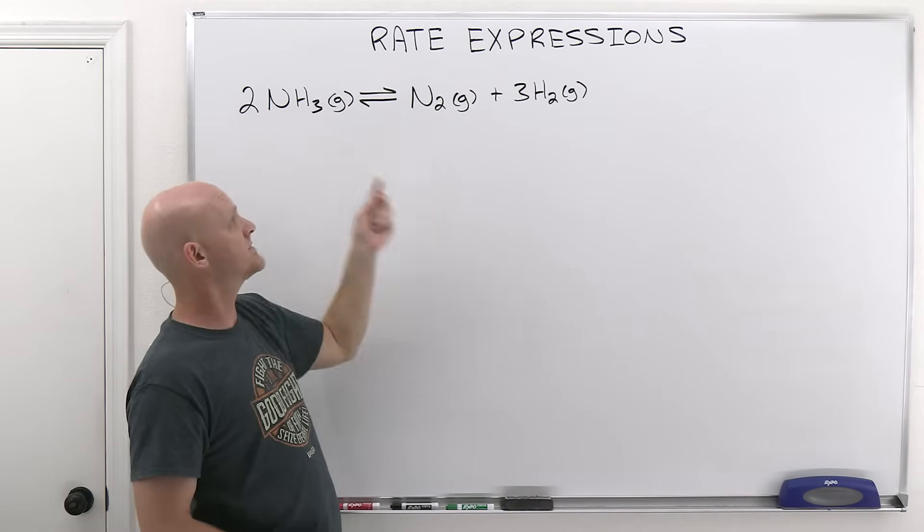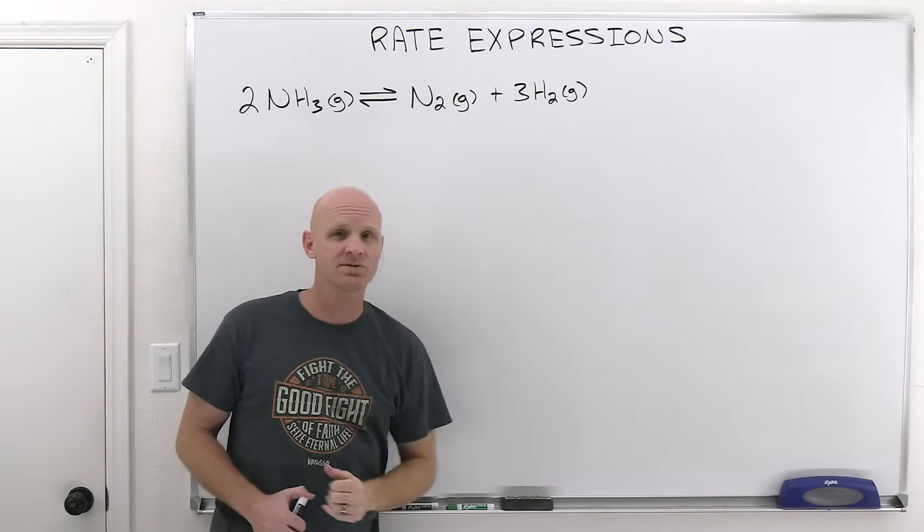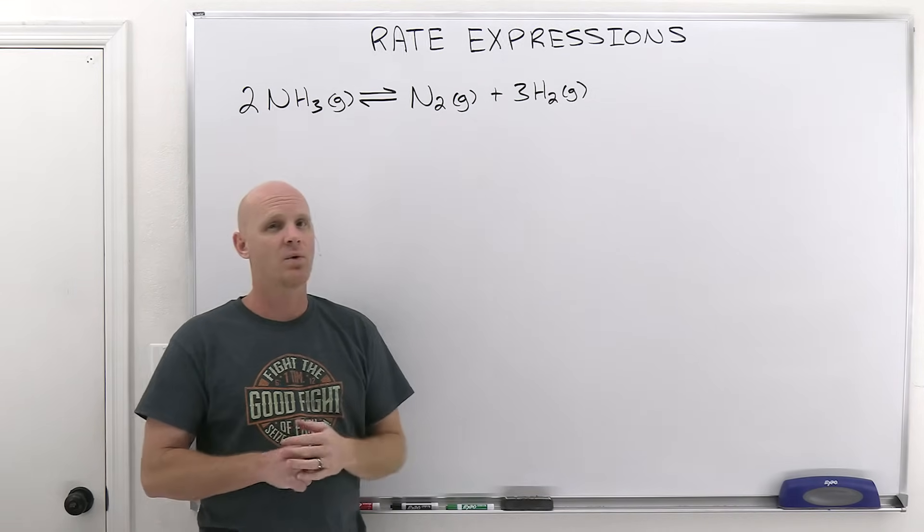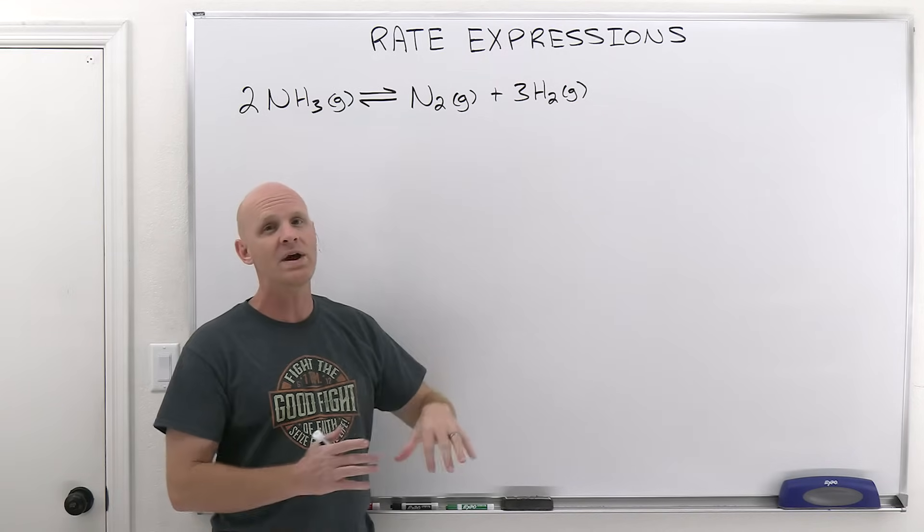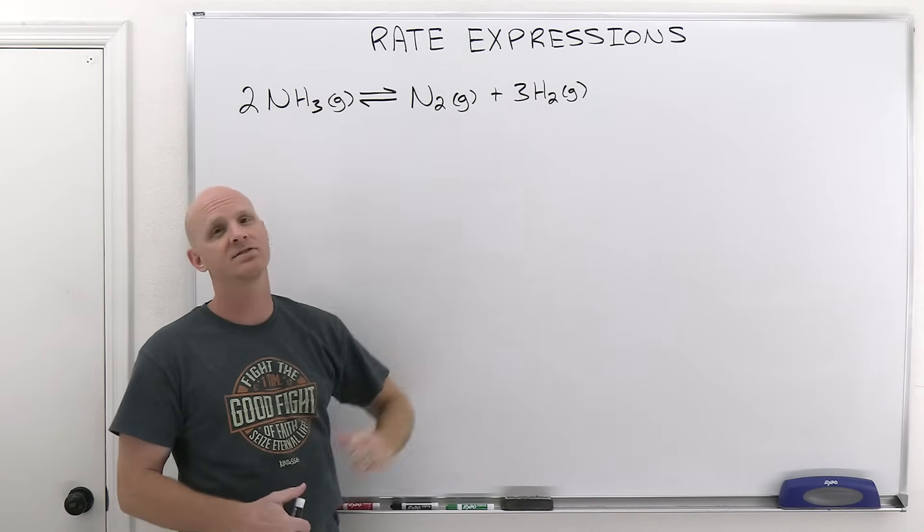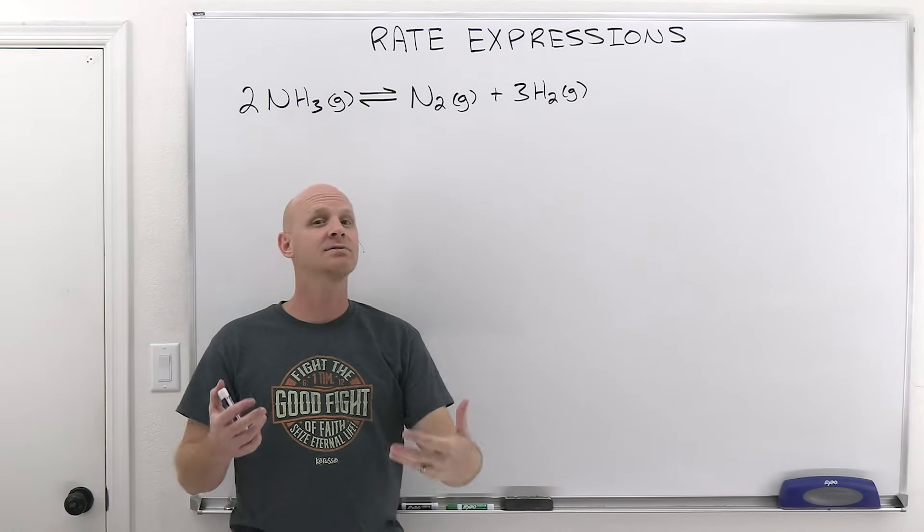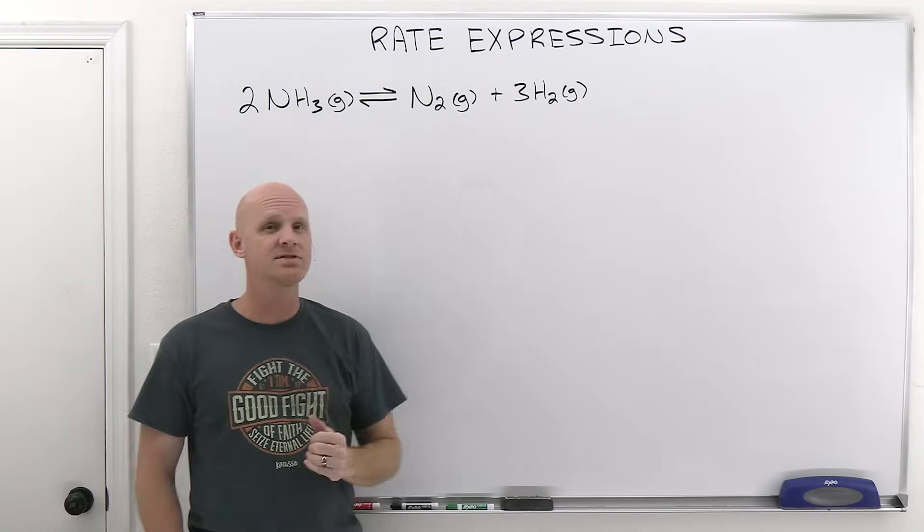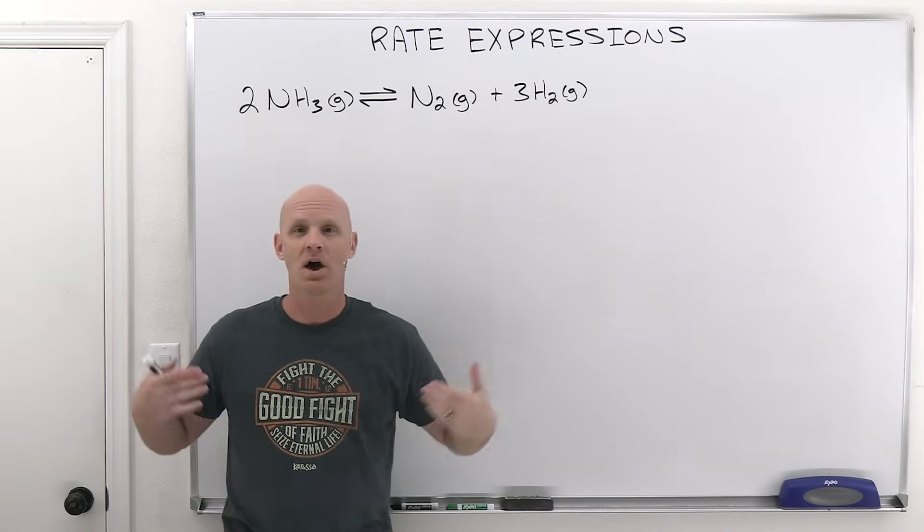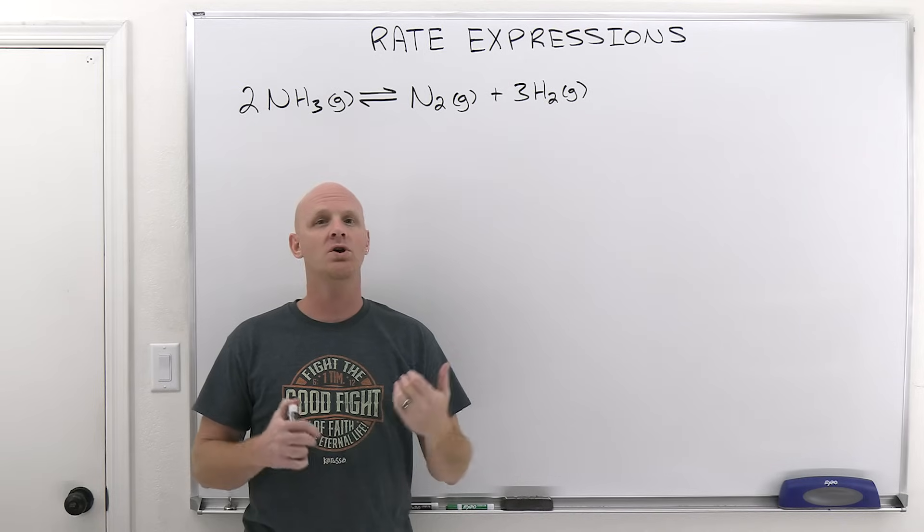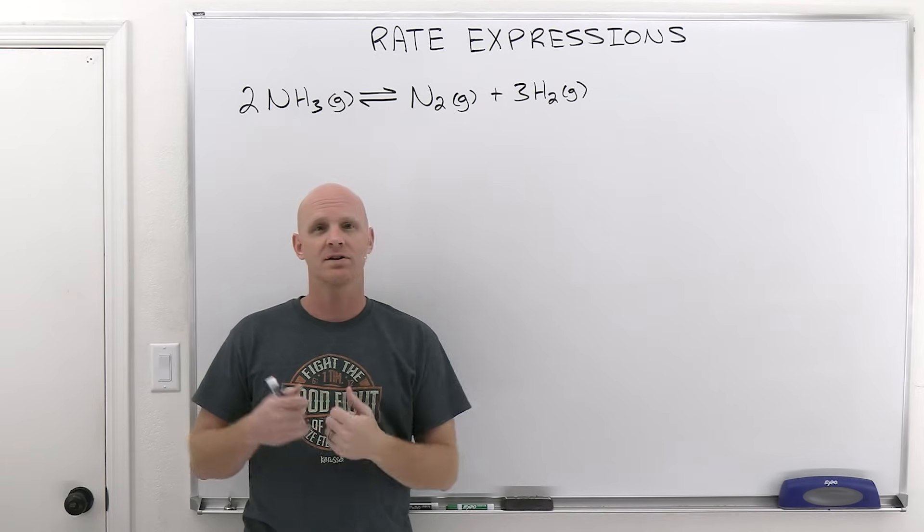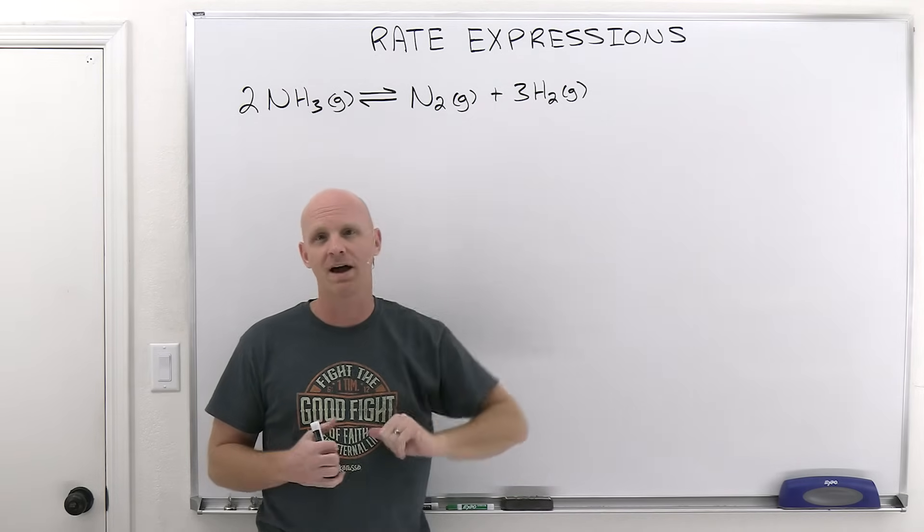So in the stoichiometry here, this 2 to 1 to 3 ratio is going to be pivotal. What we're going to do is first start looking at the rates of these individual reactants and products. We're going to start with N2, and I'm going to tell you the rate at which N2 is being produced in this reaction, let's just say is 0.1 molar per second. It's going to have units of concentration per time.